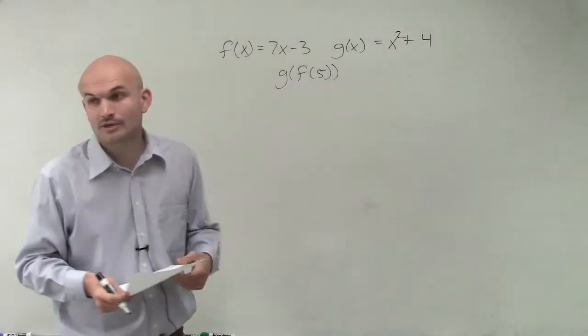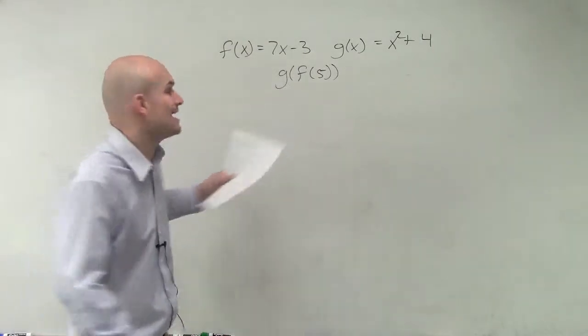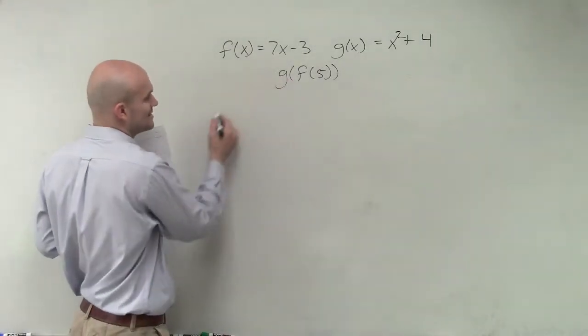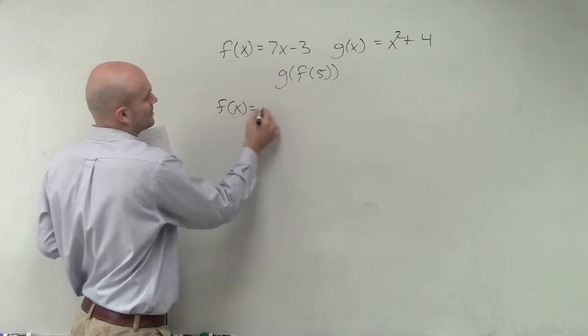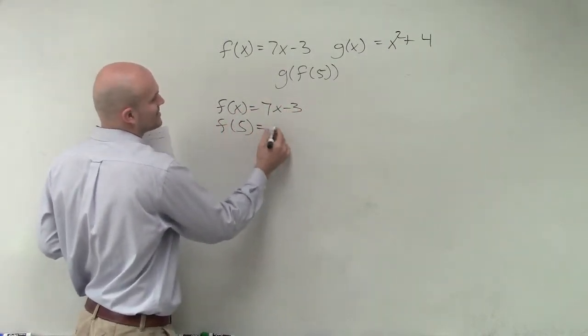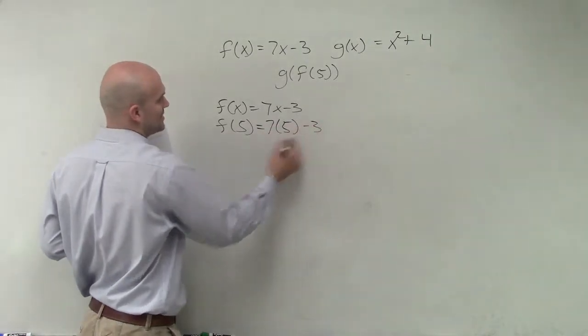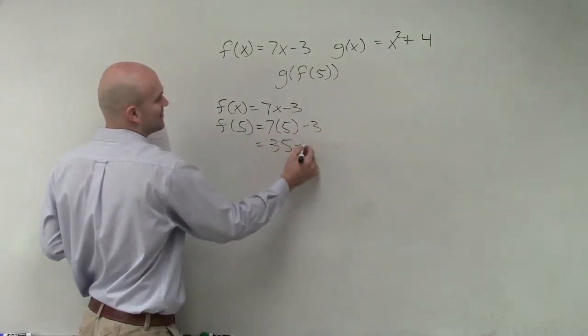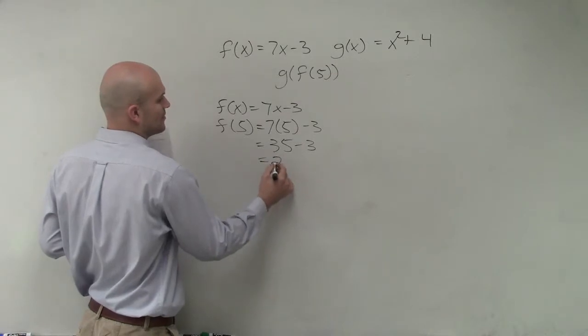So again, ladies and gentlemen, they're asking us, in the innermost function, what is f of 5? So if we know f of x equals 7x minus 3, f of 5 is going to equal 7 times 5 minus 3, which equals 35 minus 3, which equals 32.